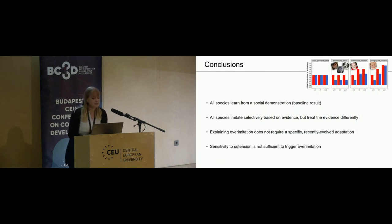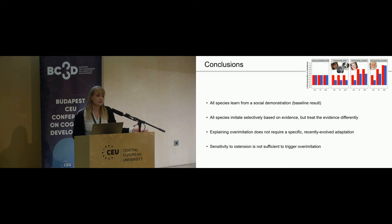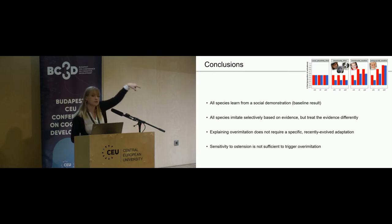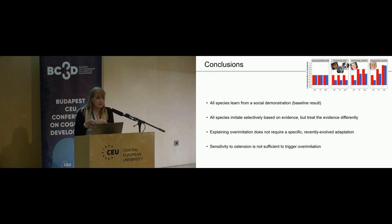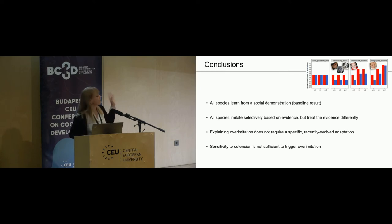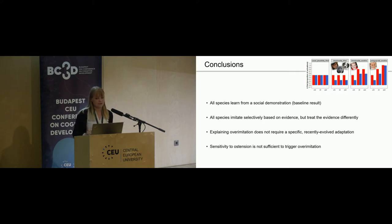In conclusion, all species learn from a social demonstration—as seen in the baseline—and all of them also imitate selectively, considering some of the evidence given. But they treat the evidence differently. Humans also take into account social information, whereas in our study the other species did not. So we can say that over-imitation does not need some specific recently-evolved adaptation, but is explainable by more general differences in social understanding. Interestingly, the sensitivity to ostension in toddlers and dogs is not sufficient to trigger over-imitation—it apparently needs a more developed mind-reading ability to perform that recursion and see a pedagogically-demonstrated action as so important as to almost always copy it.